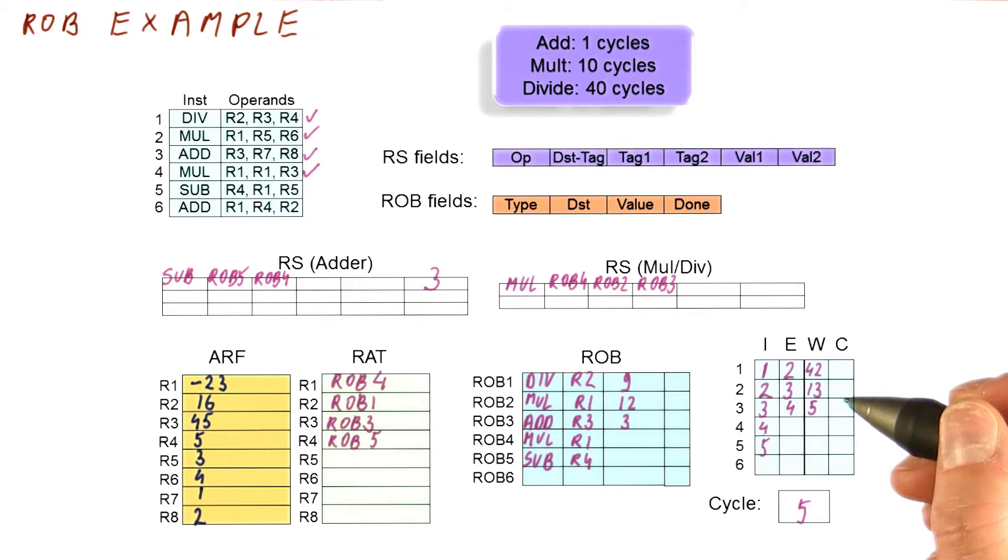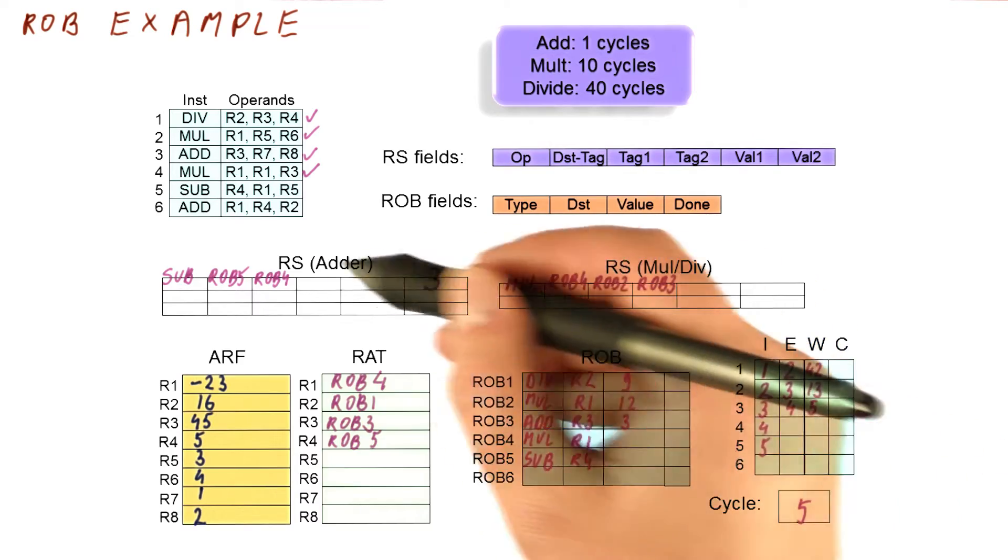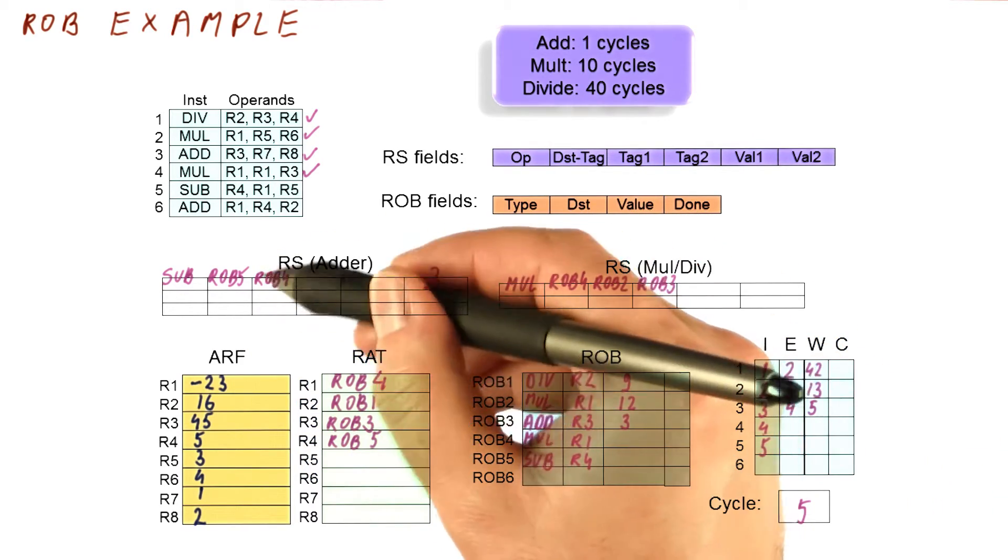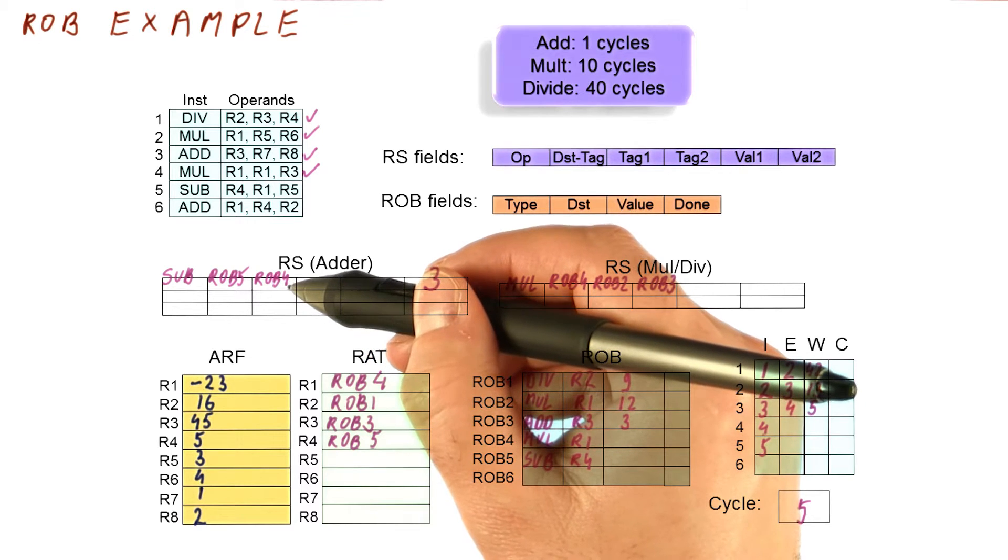I have issued this instruction in cycle five. And with that, I have completed the issue of this instruction, but it is not ready to execute because one of its operands is not available and we need to wait for it.